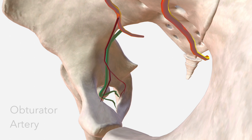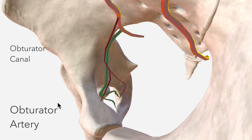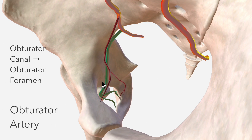Next, we have the obturator artery, which I've highlighted in green to make it more distinct. It travels in the obturator canal toward the obturator foramen, and supplies the adductor muscles in this region.